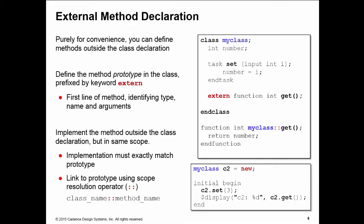Once you've declared it as an extern you must provide an implementation of that method outside the class declaration but in the same scope. The implementation must match the prototype you declared with the extern keyword, and we link our implementation to the extern declaration by using the name of the class and then the double colon operator, the scope resolution operator. For example, function myclass colon colon get is the implementation of the extern class method declared in myclass.